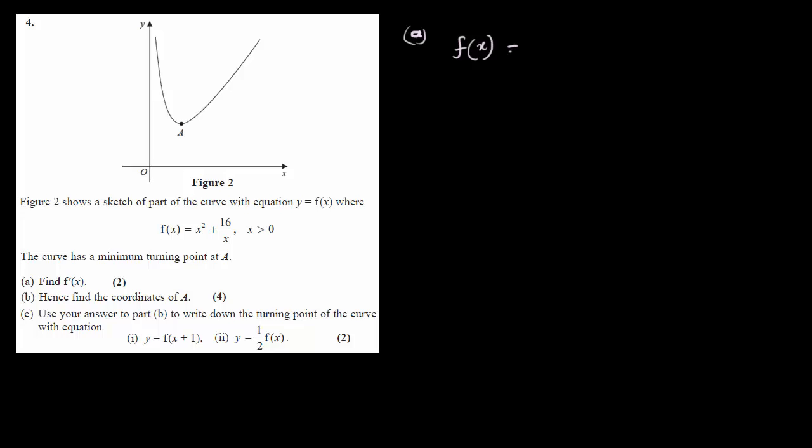Question 4 deals with turning points and differentiation. We have a curve and f(x), the function of the curve, is given. In part (a) we have to find f'(x). First, we write f(x) so that all variables are in the numerator — so 16/x becomes 16x to the power minus 1. That is what we have to do before differentiating.